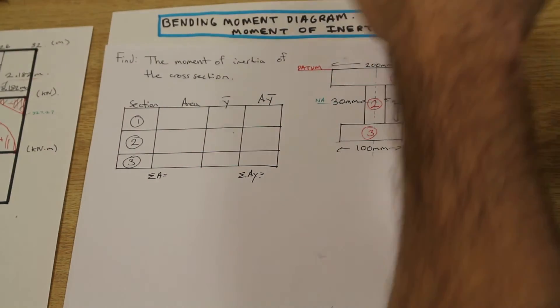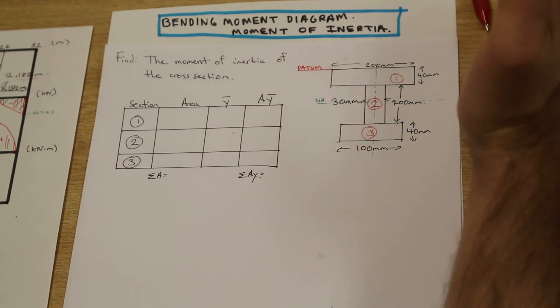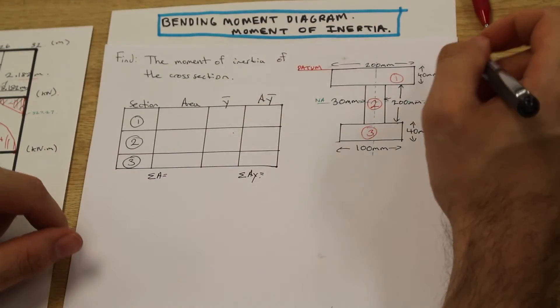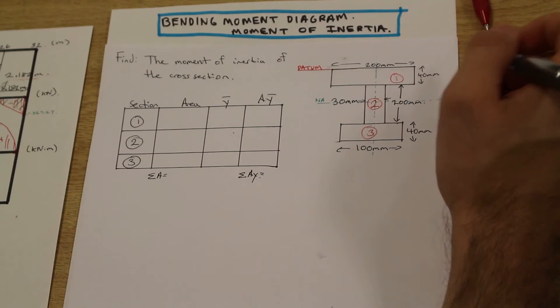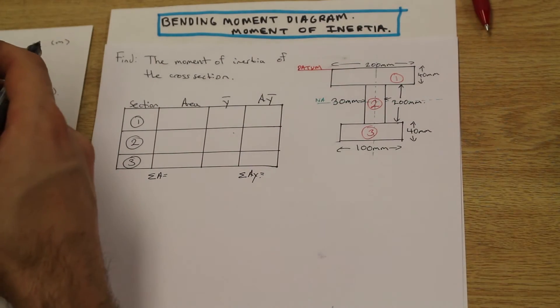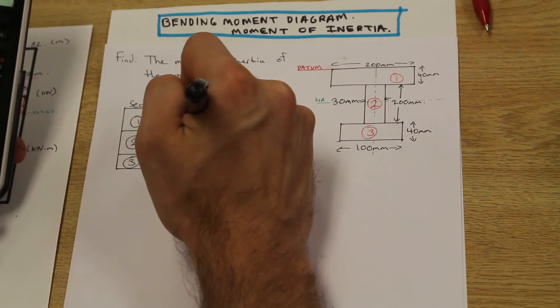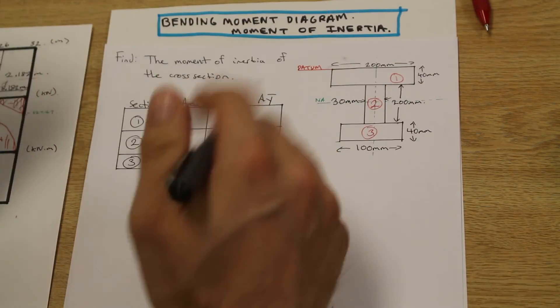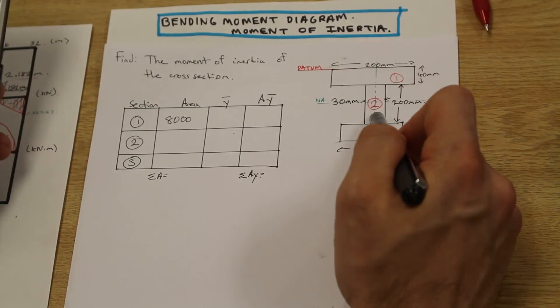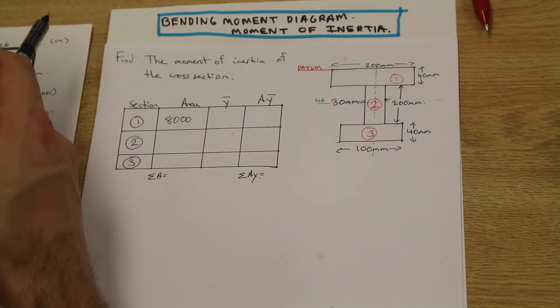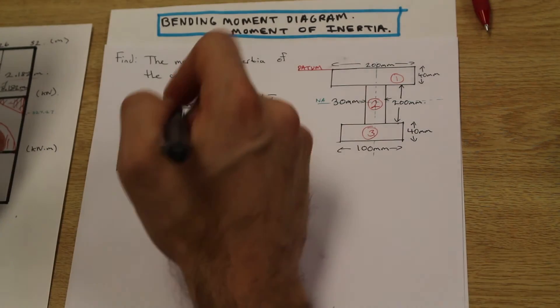Starting with section 1, we have a 200 millimeter by 40 millimeter block, that's 8,000 millimeter squared. I won't put the units in, that's fine. Section 2, we have a 200 by 30 millimeter block, that's 6,000.